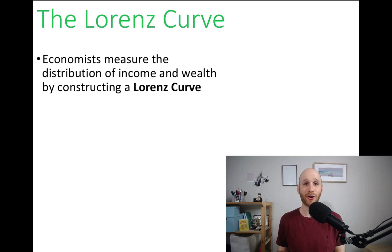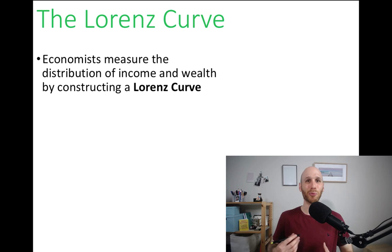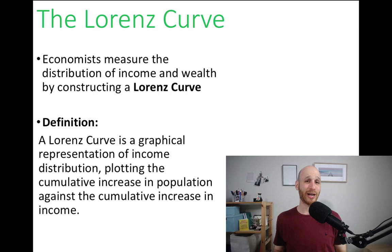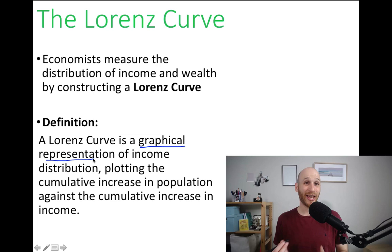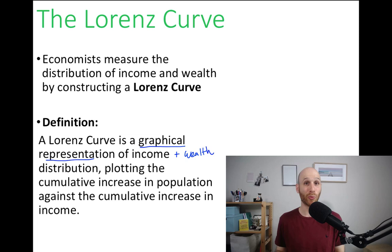Essentially we're asking: is income and wealth distributed pretty fairly, where everybody gets a share, or is it pretty unequal, where only the richest and most wealthy people control the bulk of income and wealth? A Lorenz Curve is just a graph — a graphical representation — that looks at income and wealth distribution, and what it does is plot the increase in population along one axis against the increase in income or wealth on the other.